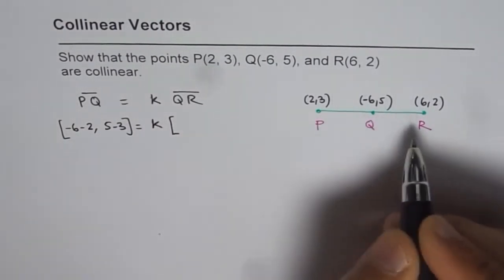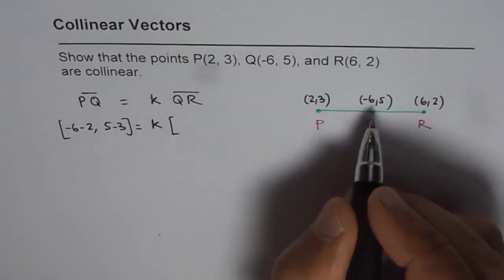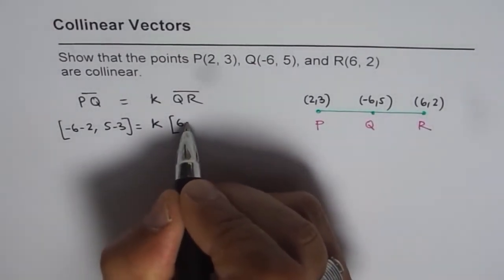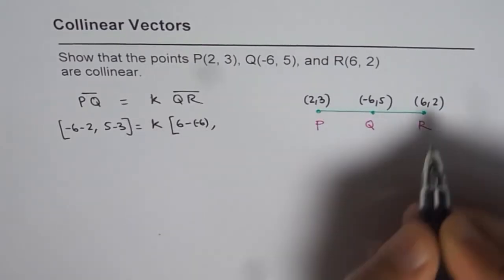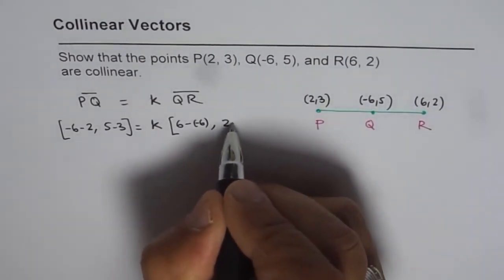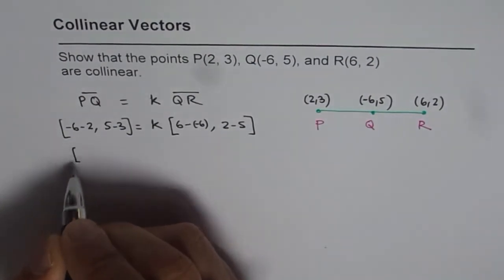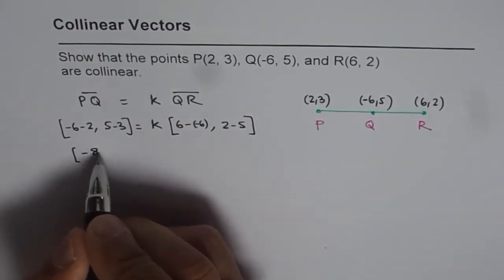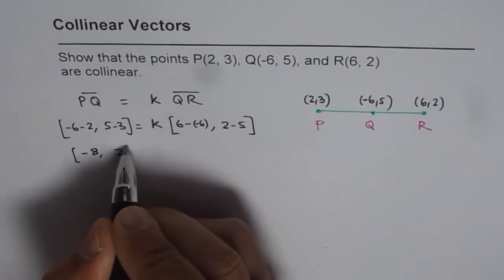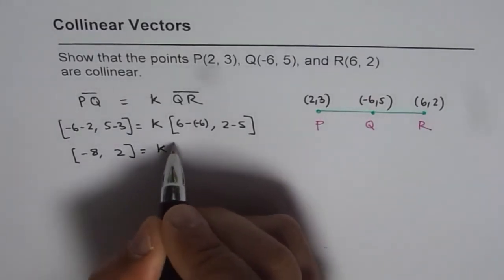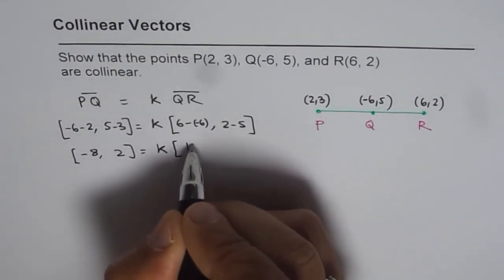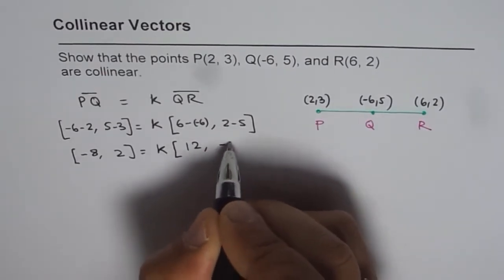And QR is going to be 6 minus 6, which is 6 minus of minus 6, and 2 minus 5. So that gives us minus 8, 5 minus 3 is 2, equals to K times. Here we have 12 minus 3.